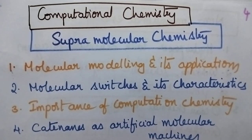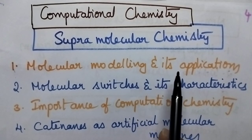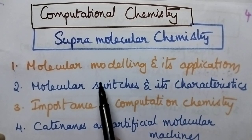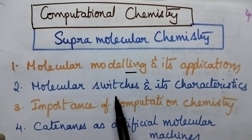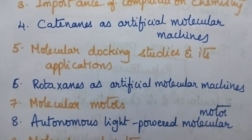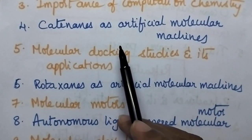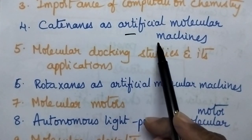Moving to the computational chemistry, it also called as supramolecular chemistry, includes molecular modeling and its applications, molecular switches and its characteristics, importance of computational chemistry, definition, structure, preparation of catenanes and catenanes as artificial molecular machines,